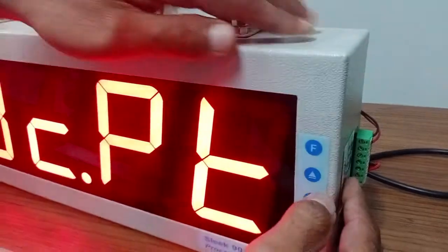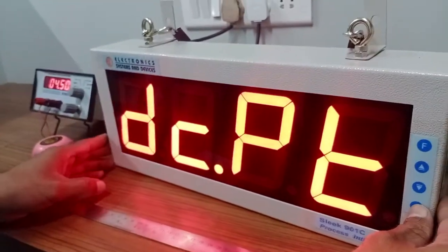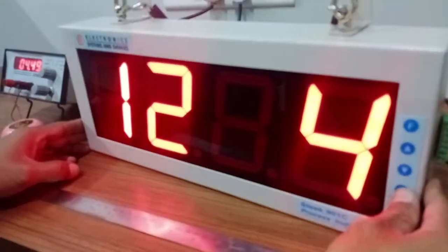You have to press the up arrow and the function key. First option you get is DCPD, that is the decimal point. The decimal point is selectable, you can just keep it anywhere.